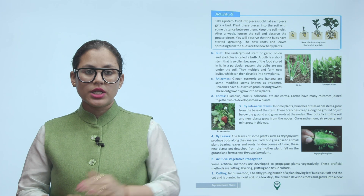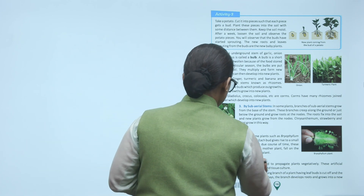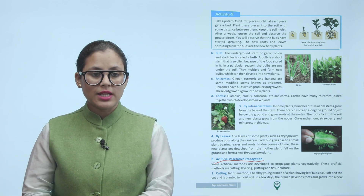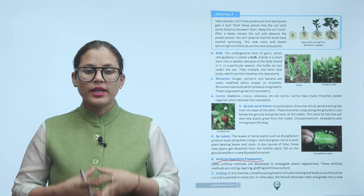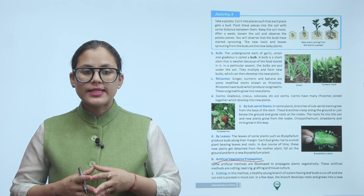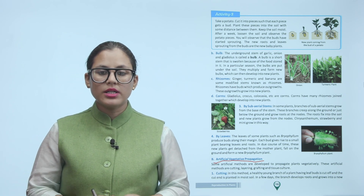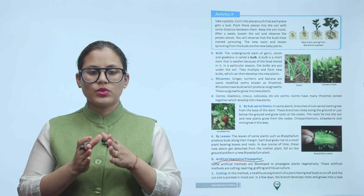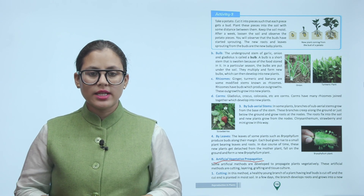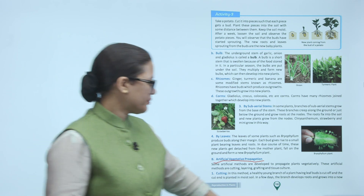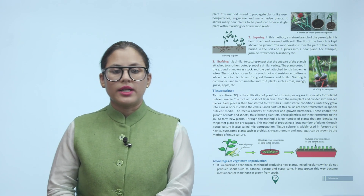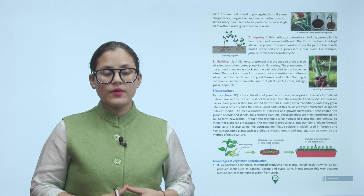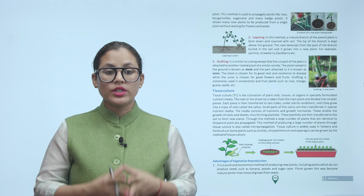Artificial vegetative propagation — some artificial methods are developed to propagate plants vegetatively. These are cutting, layering, grafting, and tissue culture. Cutting: a healthy young branch of a plant having a leaf bud is cut off, and the cut end is planted in moist soil. In a few days, the branch develops roots and grows into a new plant. This method is used for plants like rose, bougainvillea, sugarcane, and many hedge plants. It allows many new plants to be produced from a single plant without waiting for flowers and seeds.